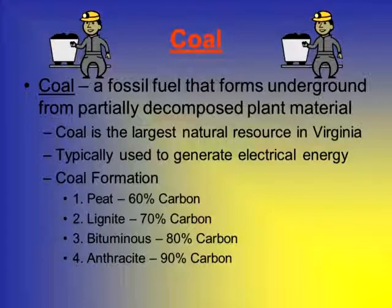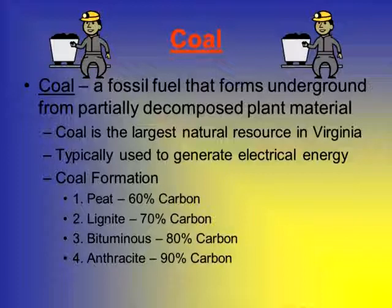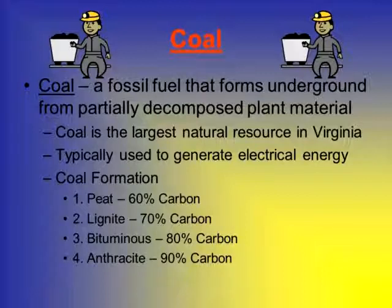Methane is what comes out when you break wind. And last but not least, coal — a fossil fuel in solid form that forms underground from partially decomposed plant material. Coal is the largest natural resource in Virginia and is Virginia's major export, typically used to make electrical energy. As coal is subjected to more heat and pressure, it becomes more purified. When coal is only about 60% carbon, we call it peat. As carbon content increases, peat changes into lignite, lignite into bituminous coal, and bituminous coal eventually changes into anthracite coal, which is 90% carbon. The more carbon content inside, the more cleanly it will burn — therefore, of the four, anthracite burns the most cleanly.